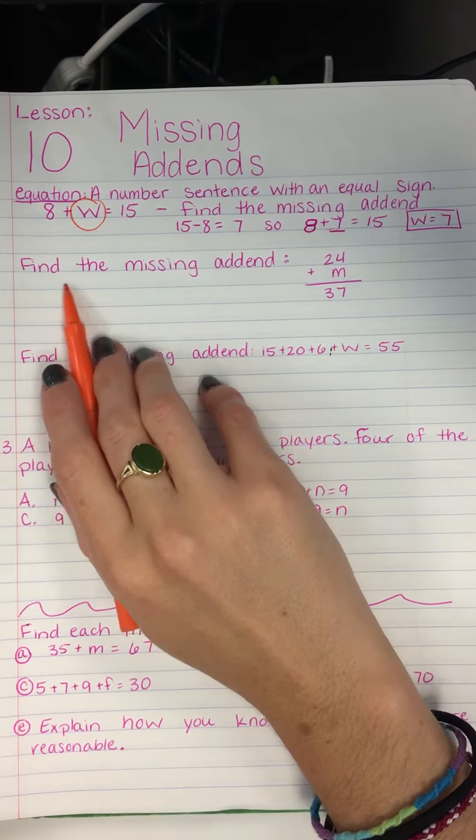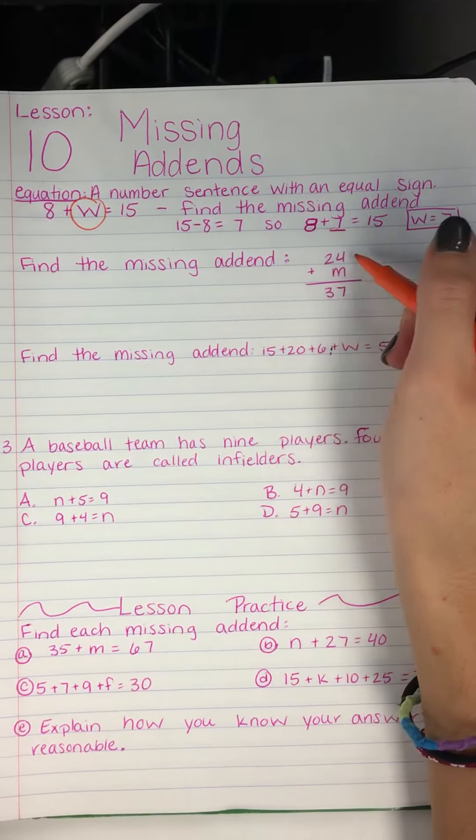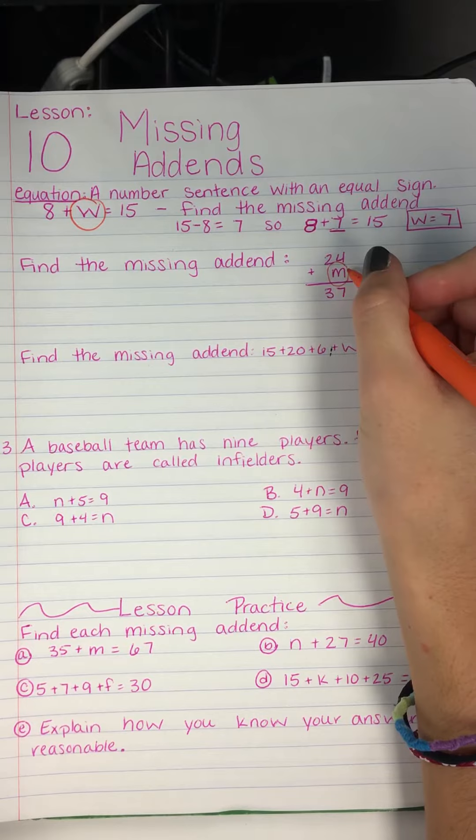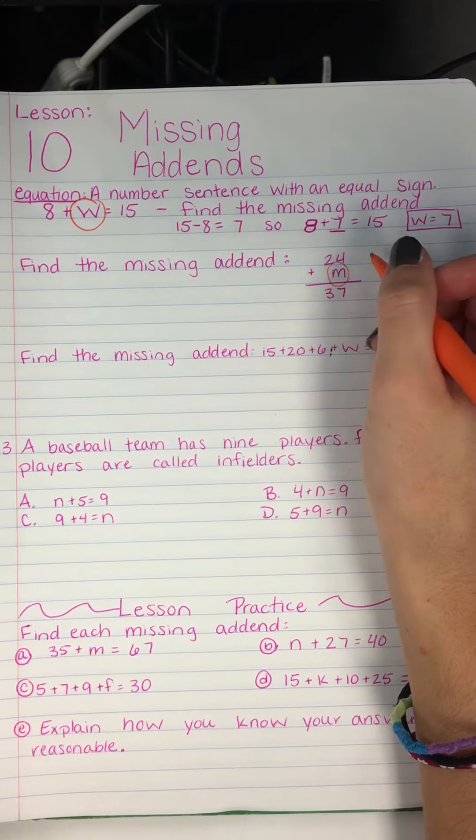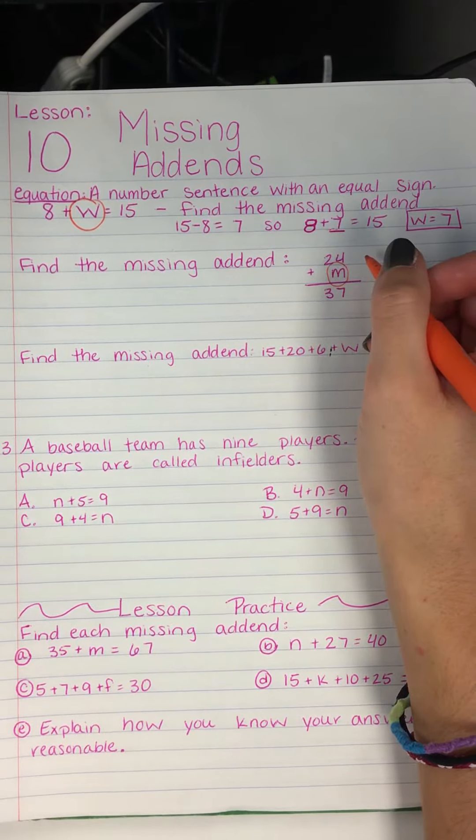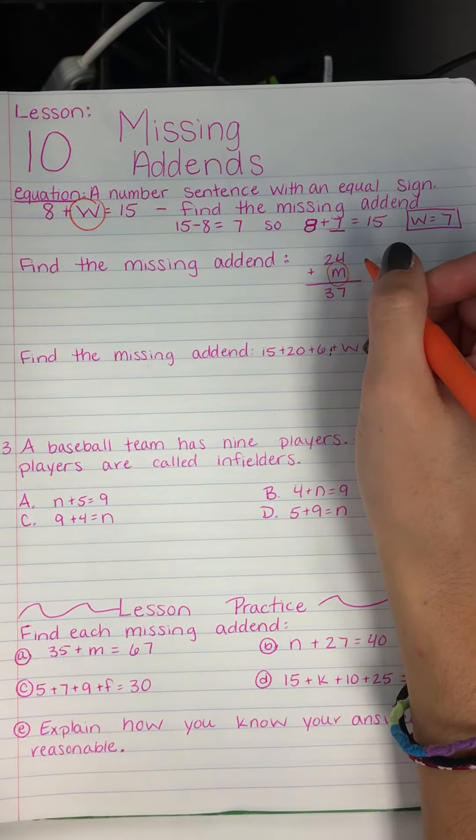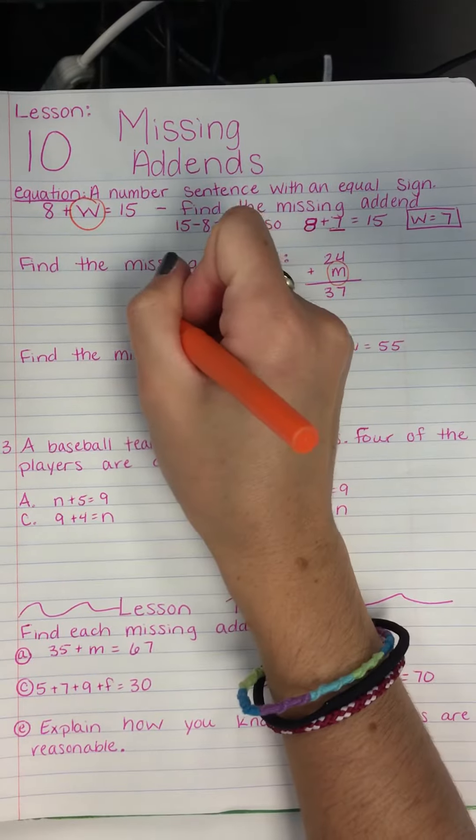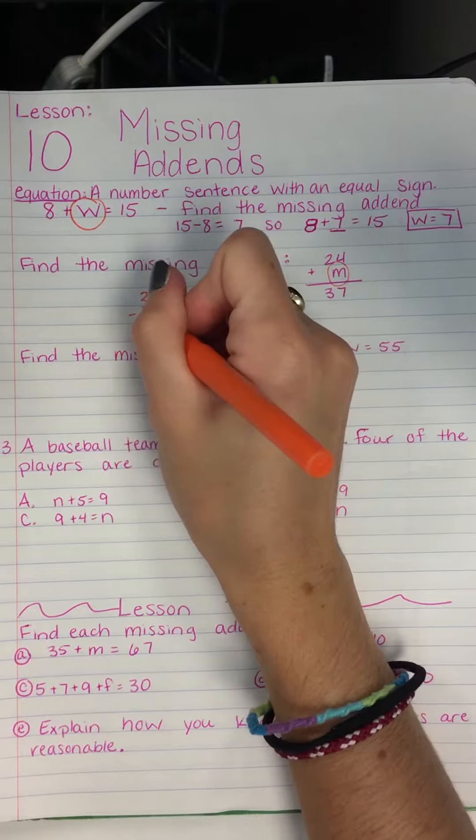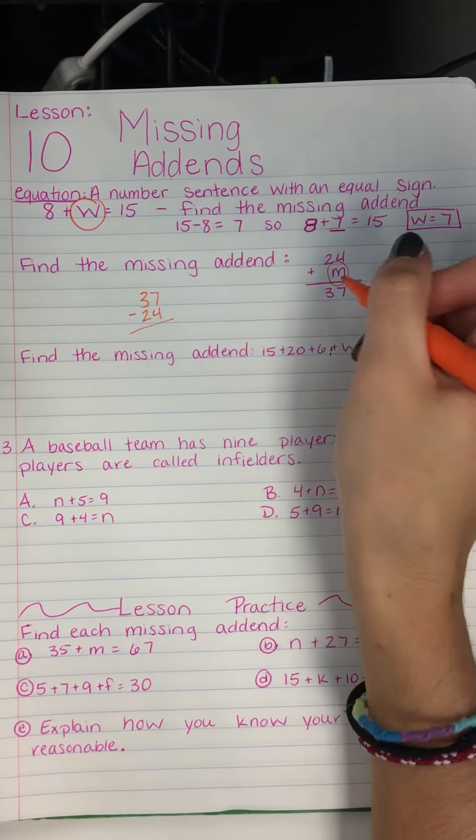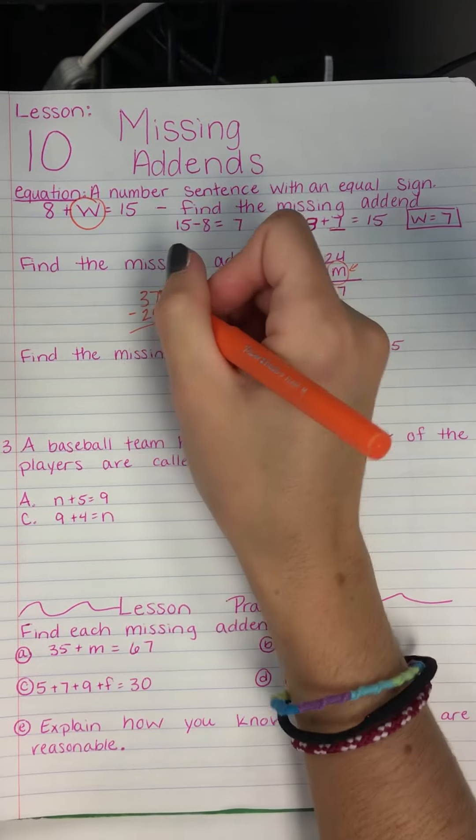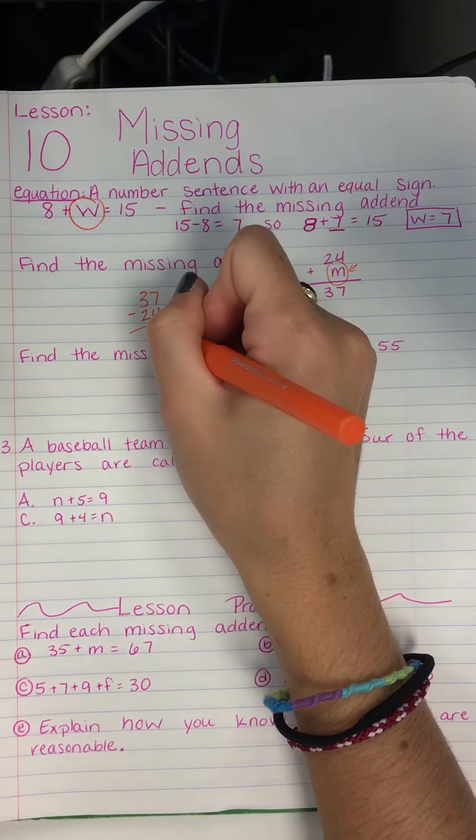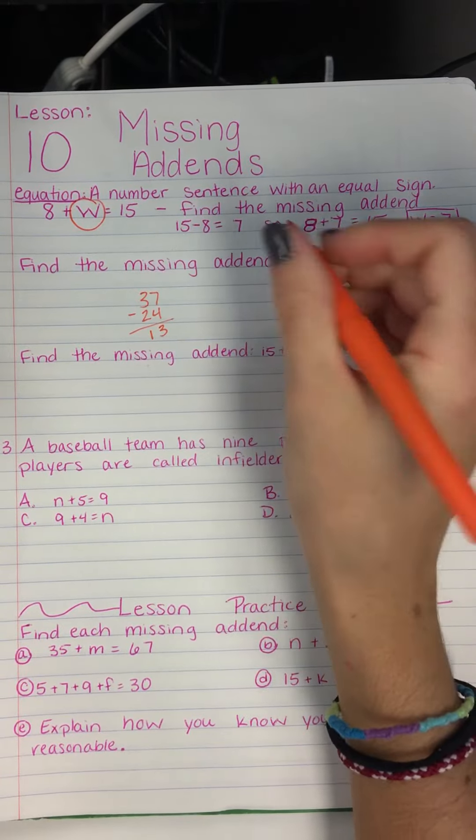Example 1. Find the missing addend. 24 plus M, this is the missing addend, equals 37. Sometimes we use letters instead of numbers when we don't know what the number should be. So sometimes the most common one used is X, I would say. So we're going to do 37 minus 24 to find what our missing addend is, or M.